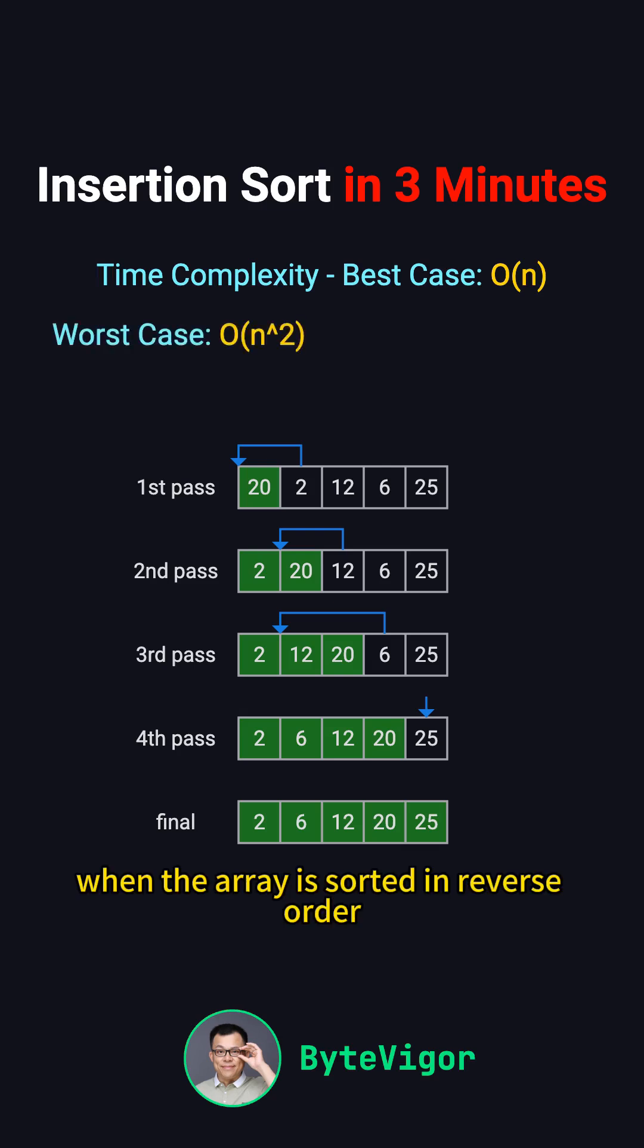In the worst case, when the array is sorted in reverse order, it requires many comparisons and shifts, resulting in a time complexity of O(n²). On average, the time complexity is also O(n²).